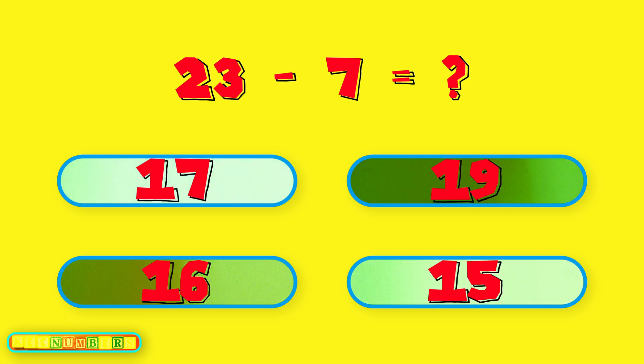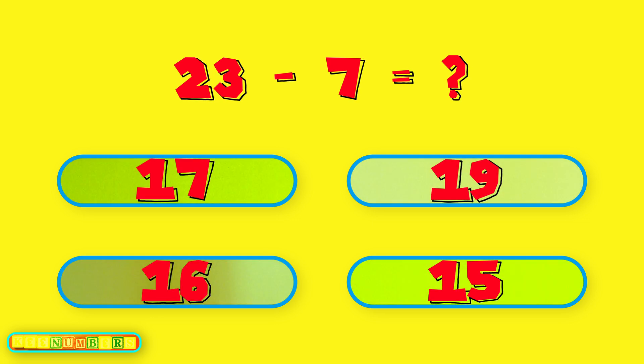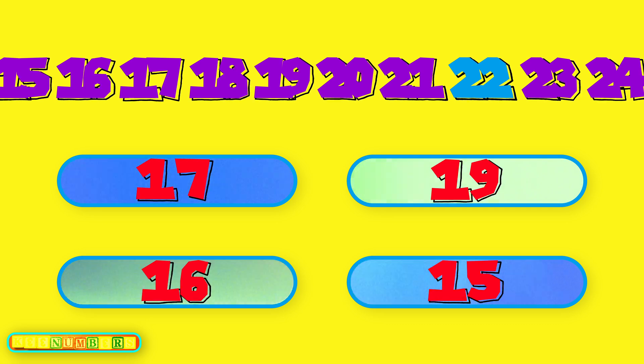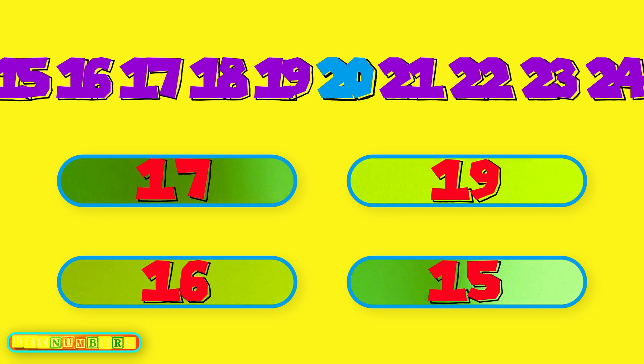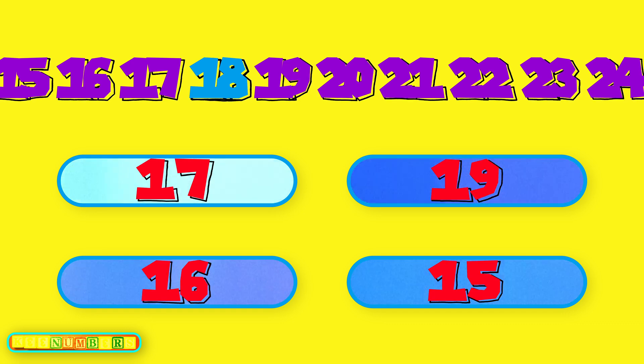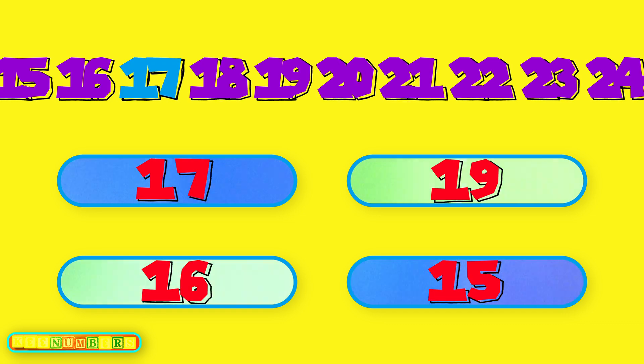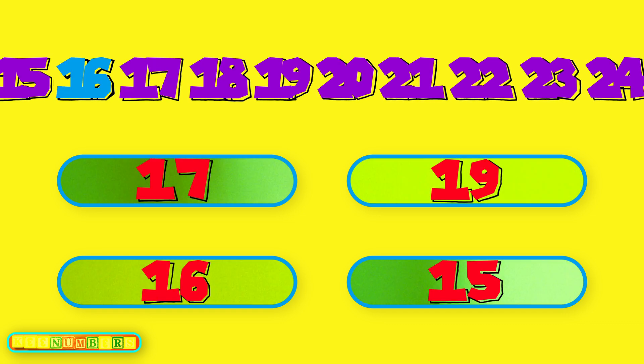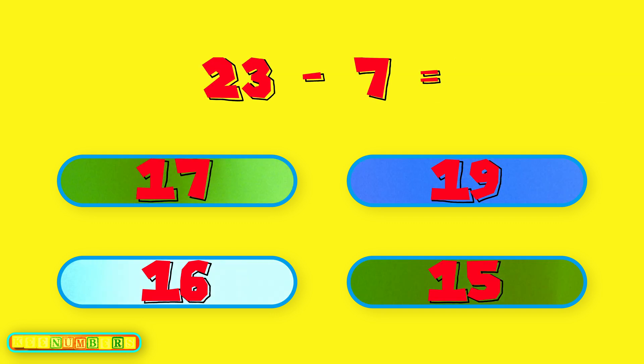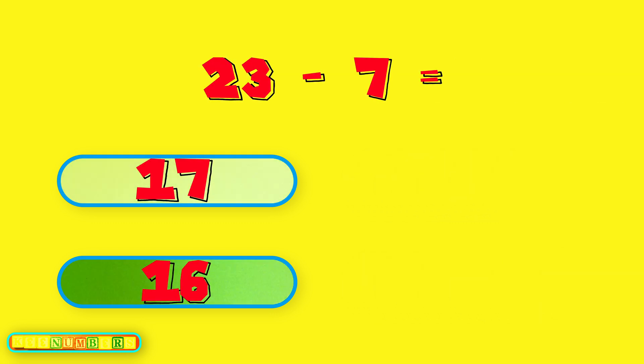Well, let's go backwards from 23, 7 spaces. Starting at 23, we have 22, 21, 20, 19, 18, 17, 16. That's it. 23 minus 7 is 16. There are 16 Gold Coins left.